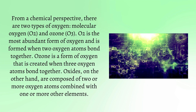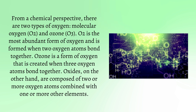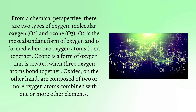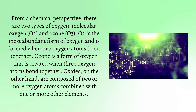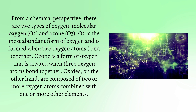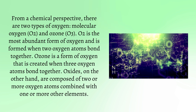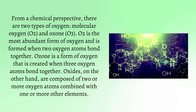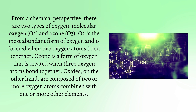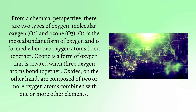From a chemical perspective, there are two types of oxygen: molecular oxygen, O2, and ozone, O3. O2 is the most abundant form of oxygen and is formed when two oxygen atoms bond together. Ozone is a form of oxygen that is created when three oxygen atoms bond together.